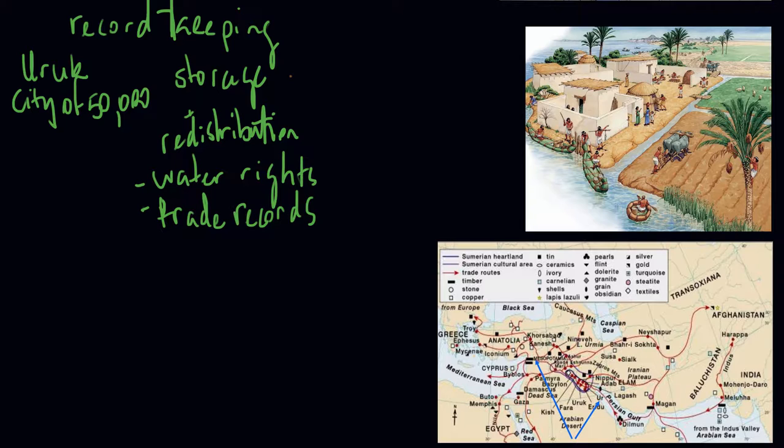So a city like Uruk needs writing in lots of ways because it conducts economic interactions on a scale and complexity that really stretches the limits of human memory. But equally, it's a city like Uruk that can make writing possible.